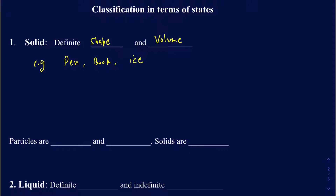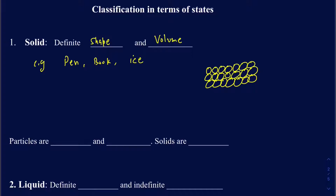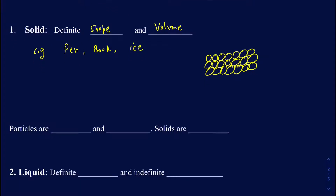What really makes a well-defined shape and volume is how the particles that make up the solid are arranged. In a solid, the particles are very close to one another, and since they are very close they also have a very fixed position and don't really move around much. As a result, it gives a very well-defined shape and volume because of the restricted motion of those particles.